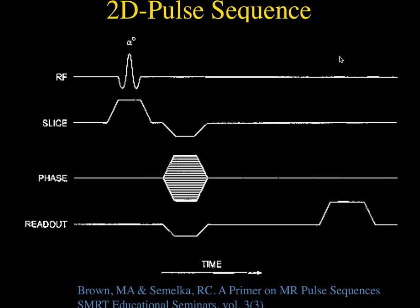The TR is always between the 90-degree pulse and the next 90-degree pulse. The time between the 90-degree pulse and the 180-degree pulse is called tau, and 2 tau equals TE.